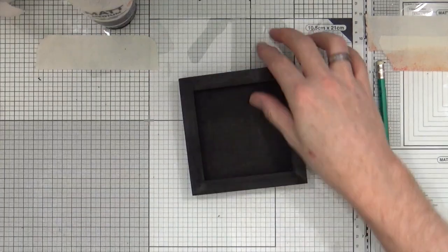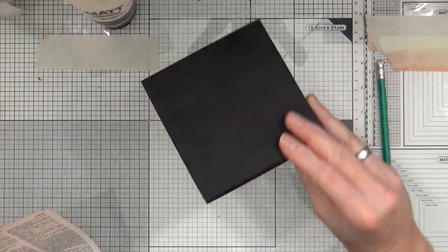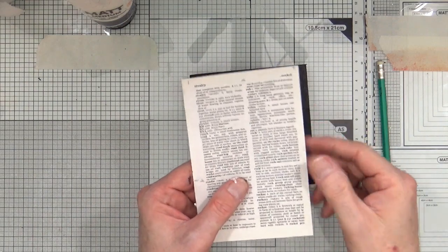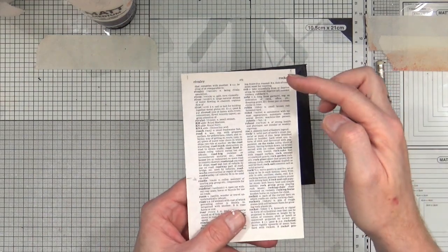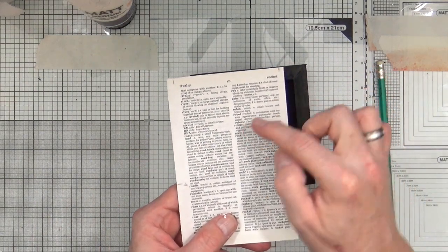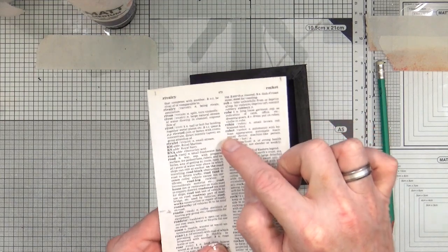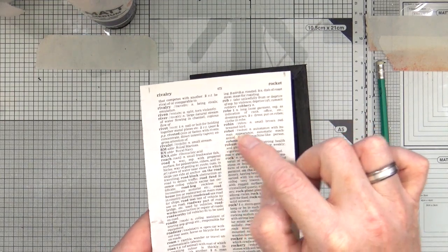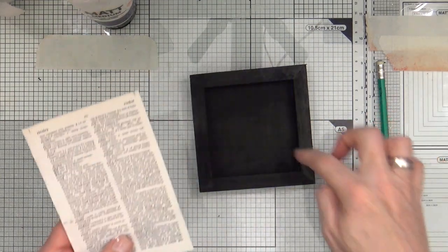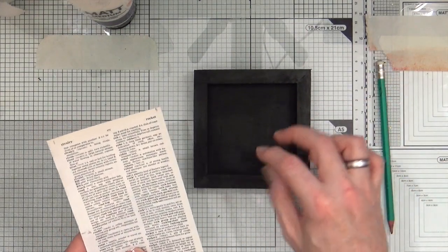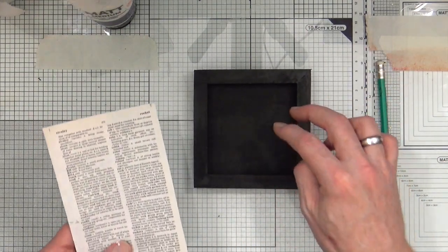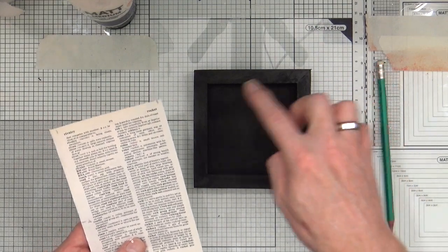Okay, so my frame is now completely painted black and is all dry. I have a dictionary page here that has the word rocket and the word robot. I'm going to use this as the back piece to stick all my bits and pieces for my assemblage box there.